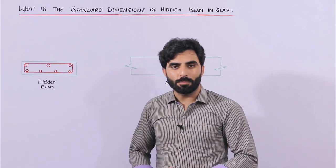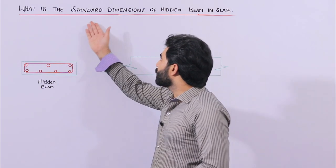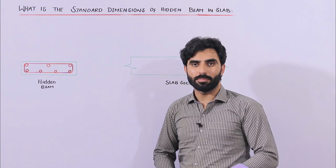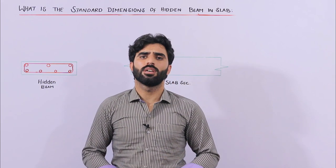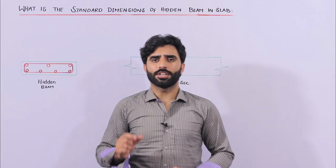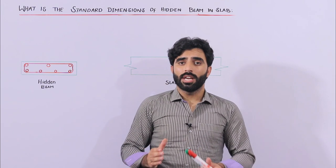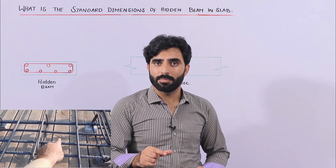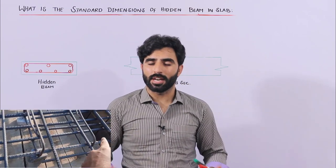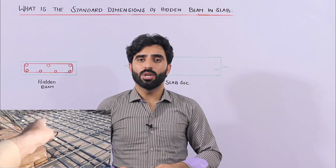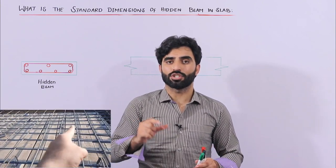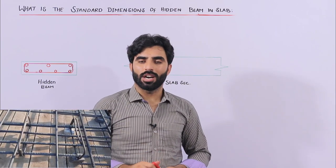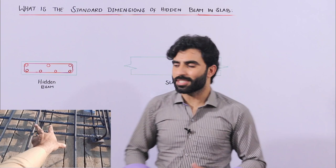Today the topic is: what are the standard dimensions of a hidden beam and RCC slab? If you want to build a residential building — two story or three story — and the span of the RCC column is more than 20 feet, such as a living room, hall, or veranda, you should provide a hidden beam to control the structural load and distribute or transfer it to the floor beams, which then transfer to the RCC columns.